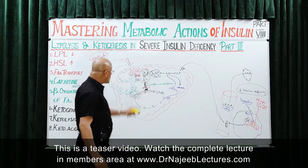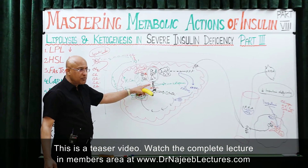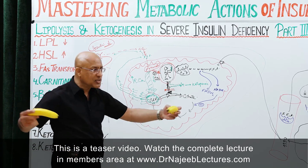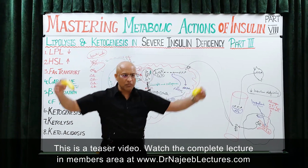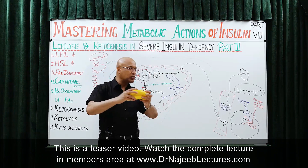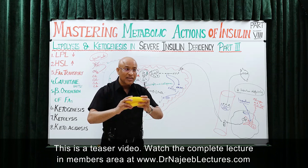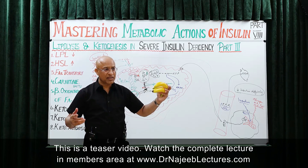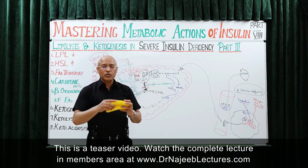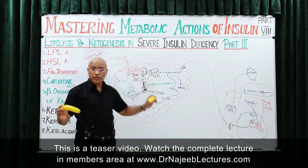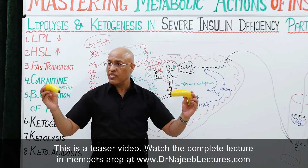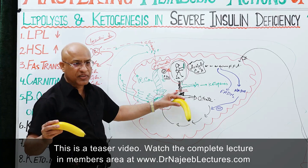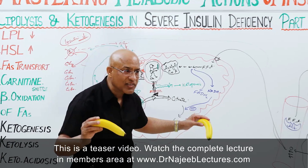These acetyl-CoA molecules — these monkeys — cannot go into the citric acid cycle. So what will happen to them? They will hug each other. They were supposed to join with oxaloacetate, but in such a frustrating situation they hug each other instead. In the hepatic mitochondria, when there is an excessive amount of acetyl-CoA, the monkeys are not allowed to enter the citric acid cycle. They get frustrated and go into the jungle of ketogenesis.